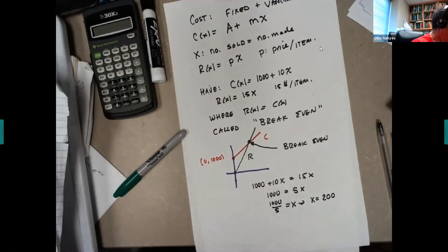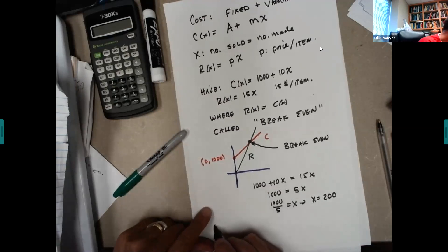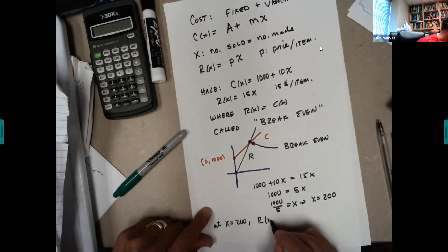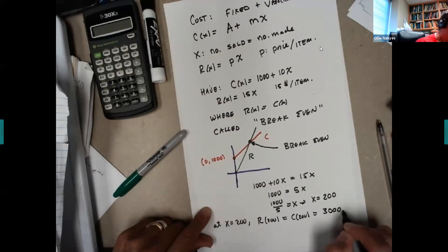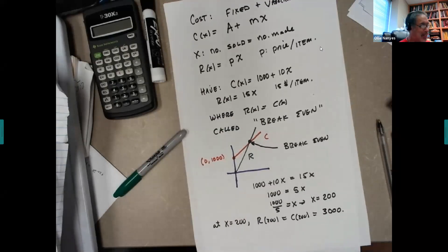So at that level, 200 is a number you need to sell off to have break even. And at this point, revenue is equal to cost of 200, which is equal to 3000. And that's how you do a break even problem. Okay.